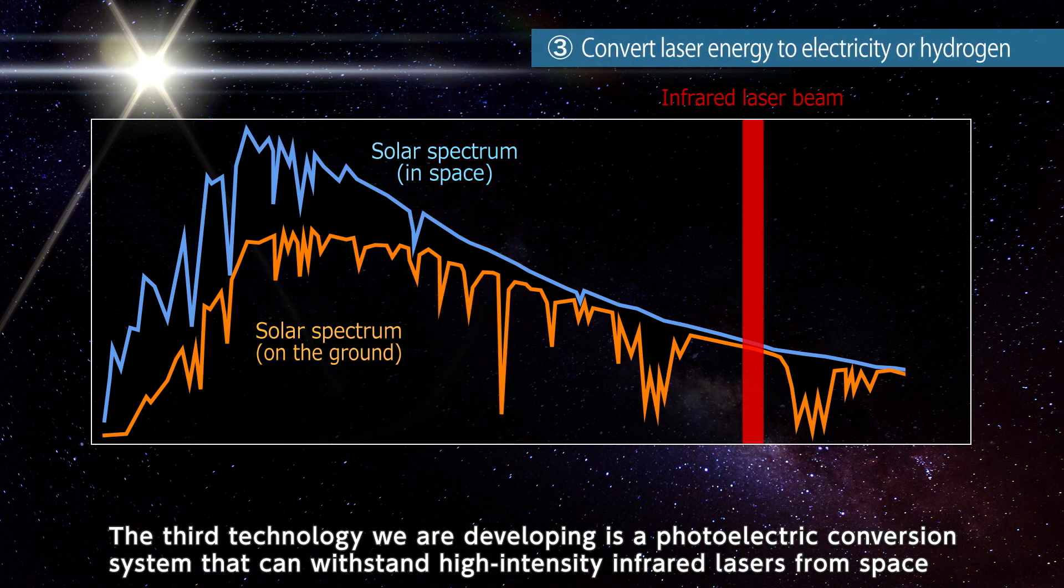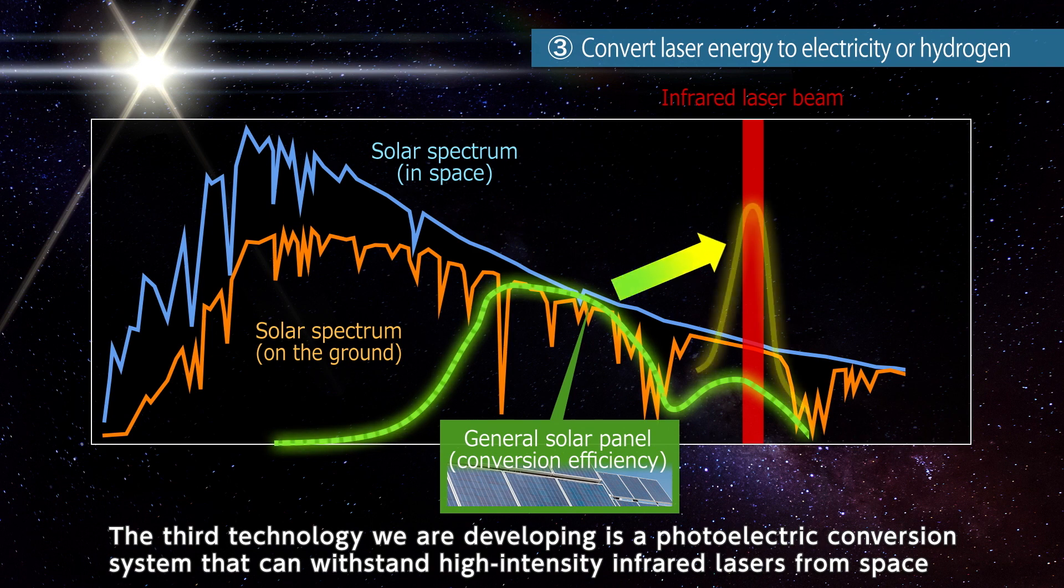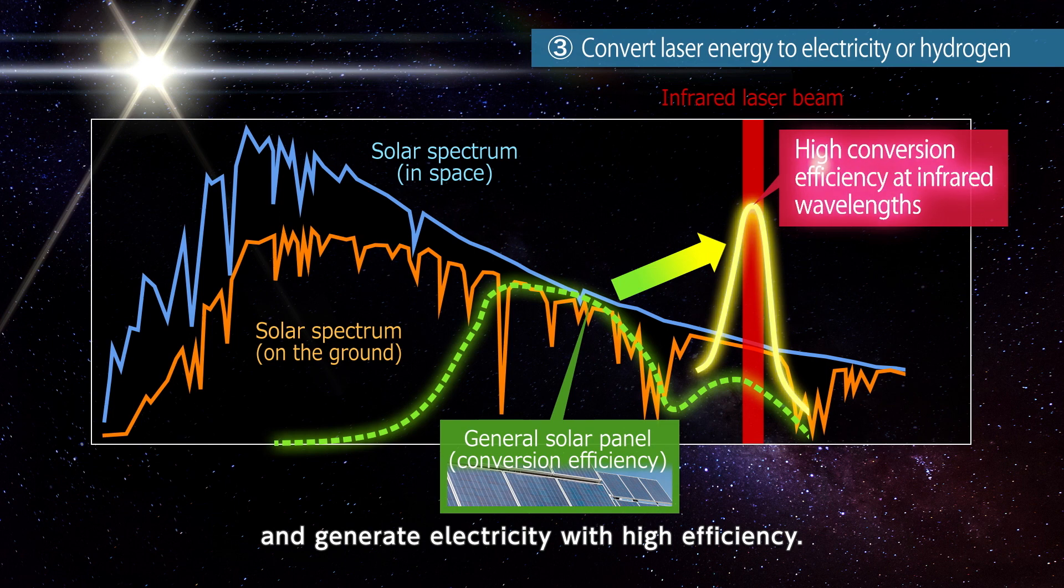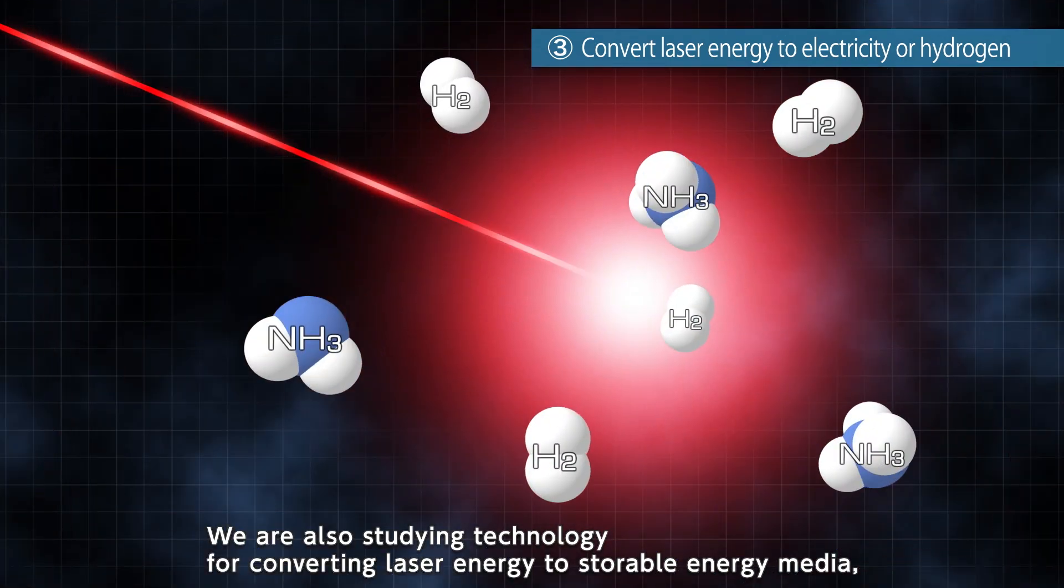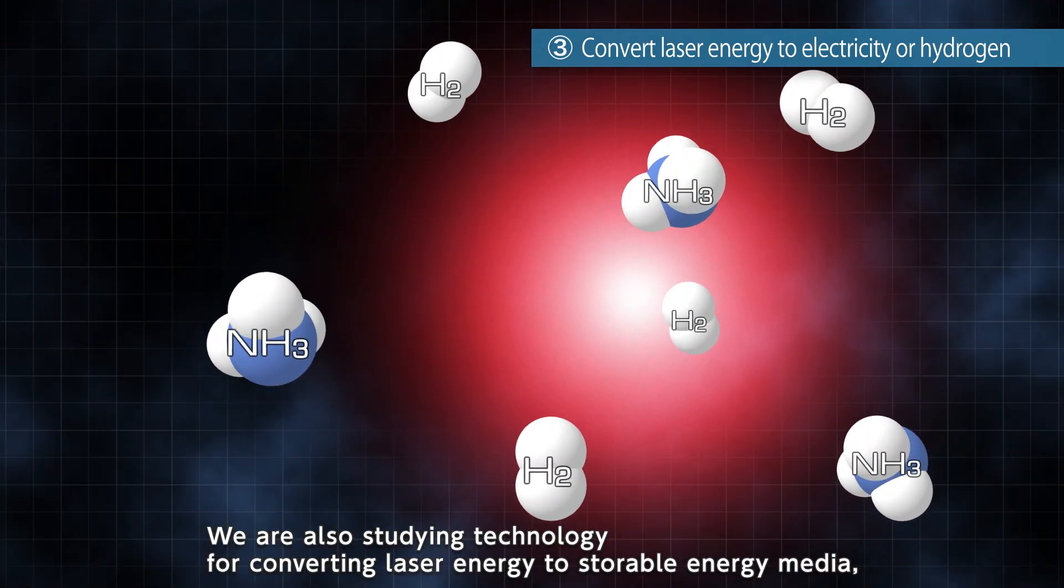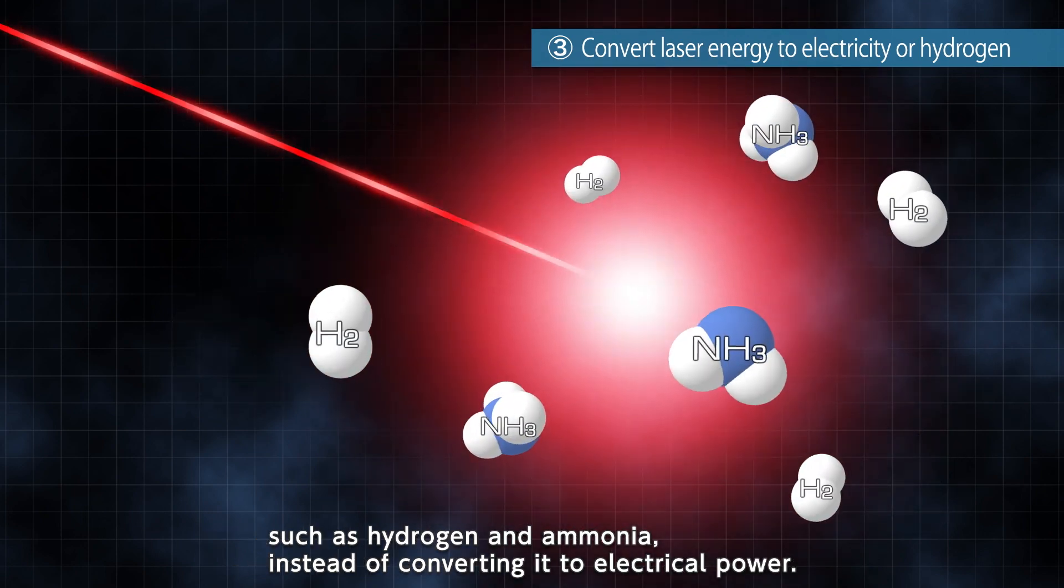The third technology we are developing is a photoelectric conversion system that can withstand high-intensity infrared lasers from space and generate electricity with high efficiency. We are also studying technology for converting laser energy to storable energy media, such as hydrogen and ammonia, instead of converting it to electrical power.